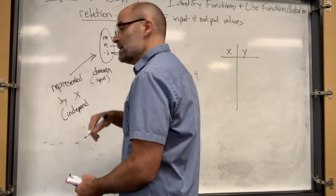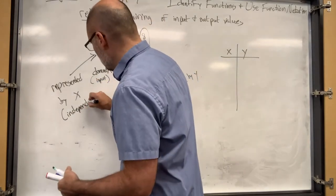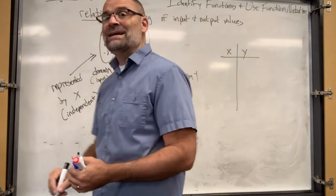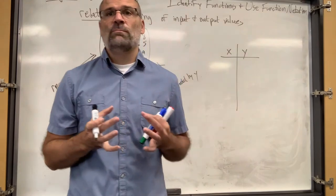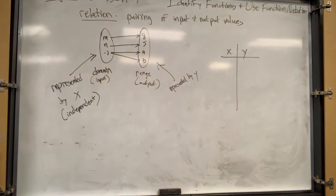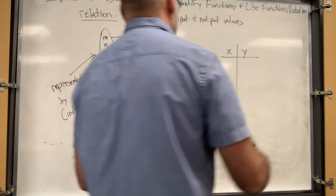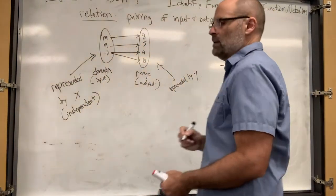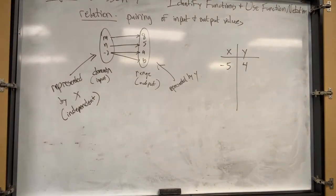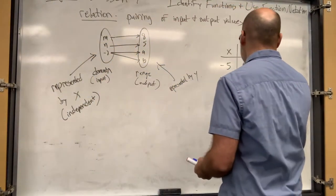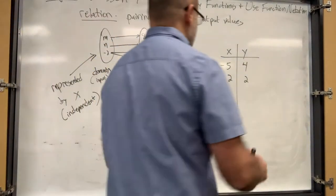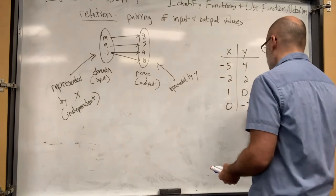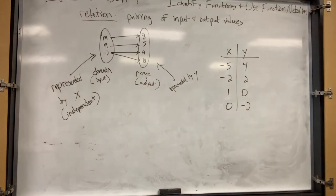This is the independent variable - this is what has to go through the machine, what has to do the work. Your y is dependent upon whatever the x is. So if you put an x into the machine it's going to spit out a specific y. For example, if you put in negative 5 you might get 4; if you put in negative 2 maybe you get positive 2; if you put in 1 you get 0; if you put in 0 you get negative 2.